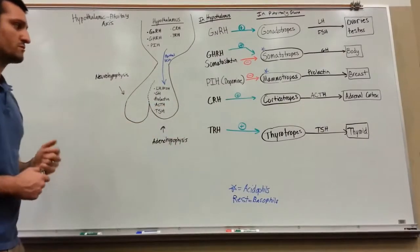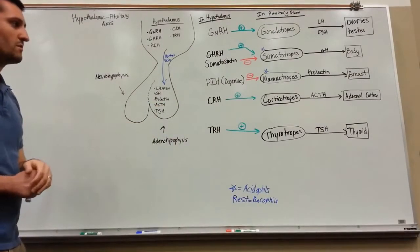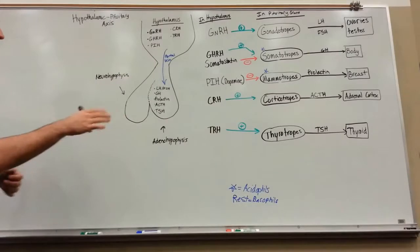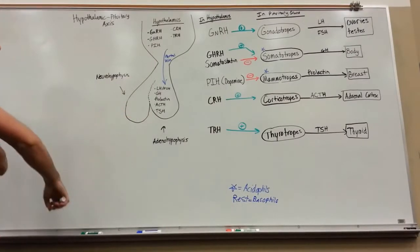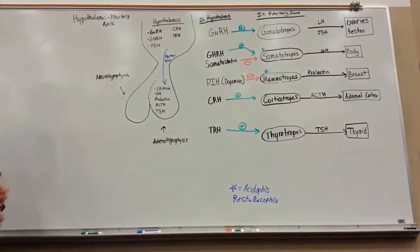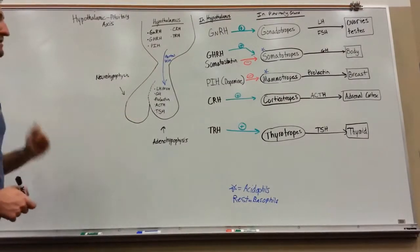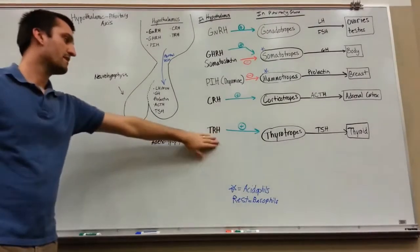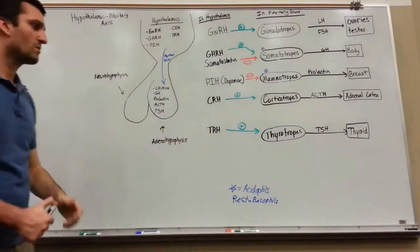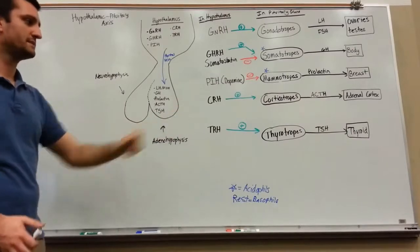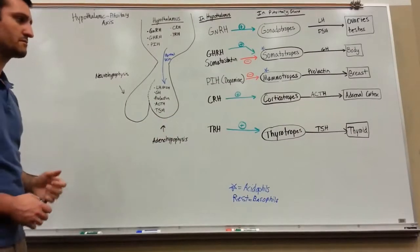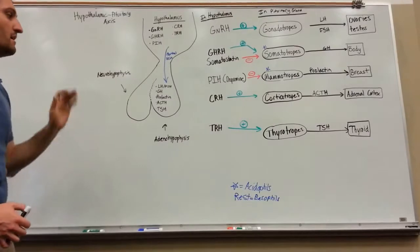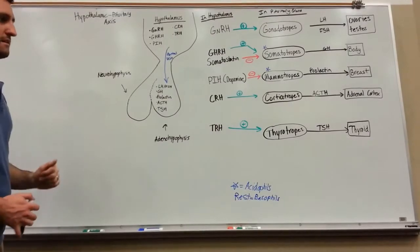You've also got corticotropin-releasing hormone, which is going to positively stimulate ACTH, released from the corticotropes down into the adenohypophysis, which goes to the adrenal cortex. And then finally, you've got thyrotropin-releasing hormone, which is going to positively stimulate those thyrotropes, releasing TSH down into the bloodstream, going to the thyroid gland.